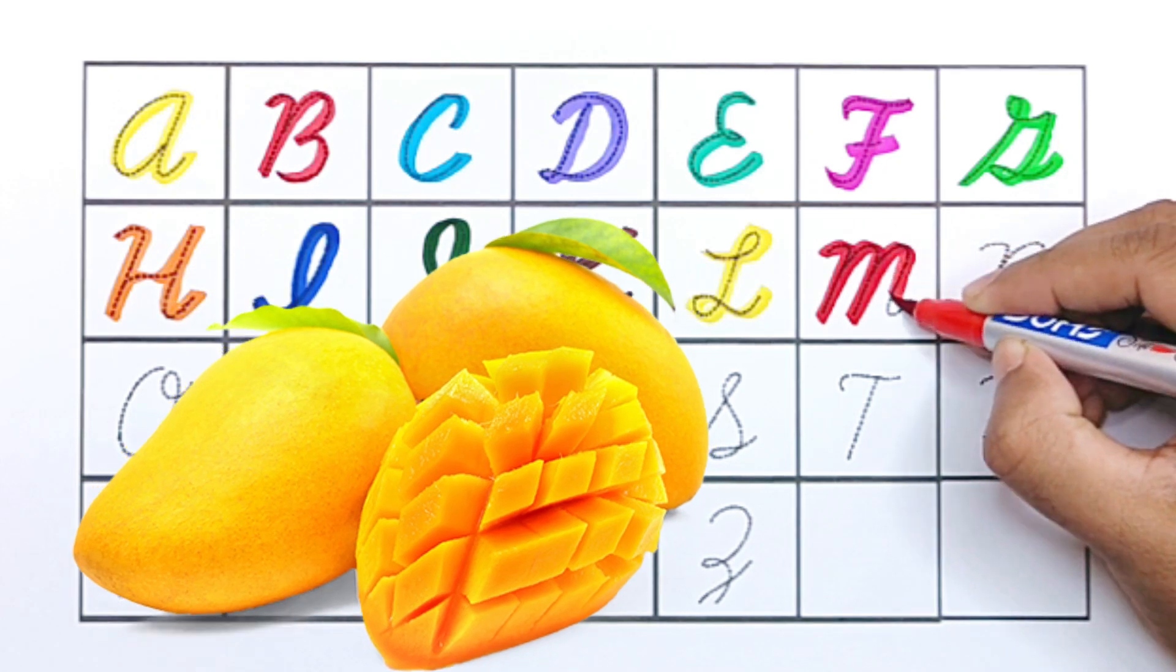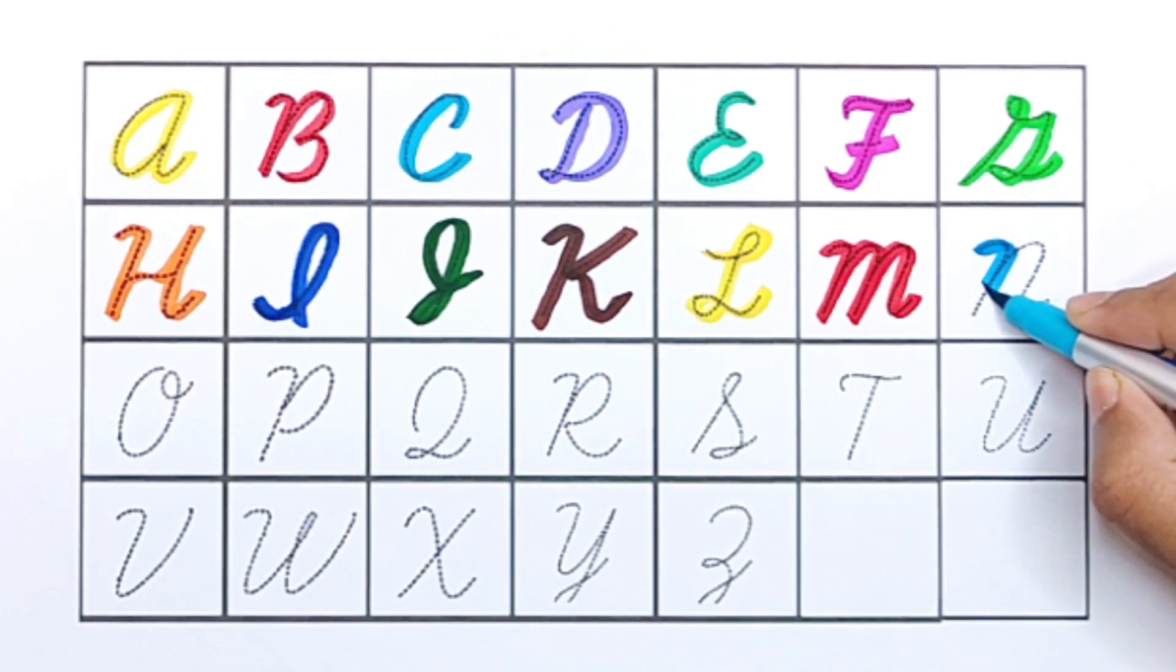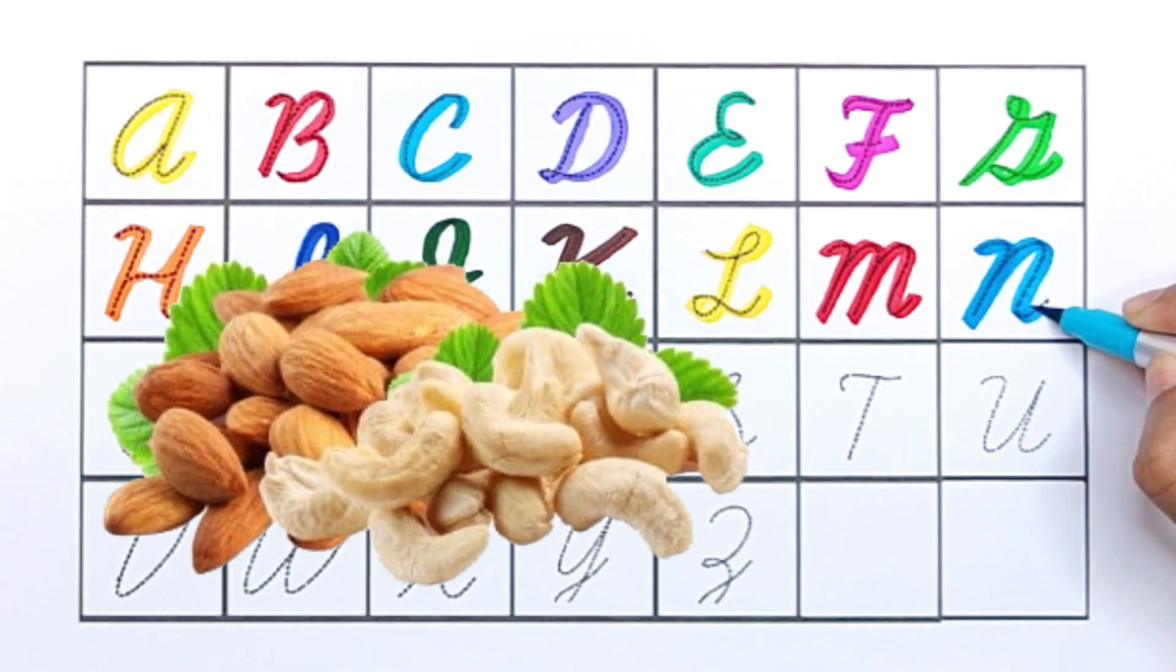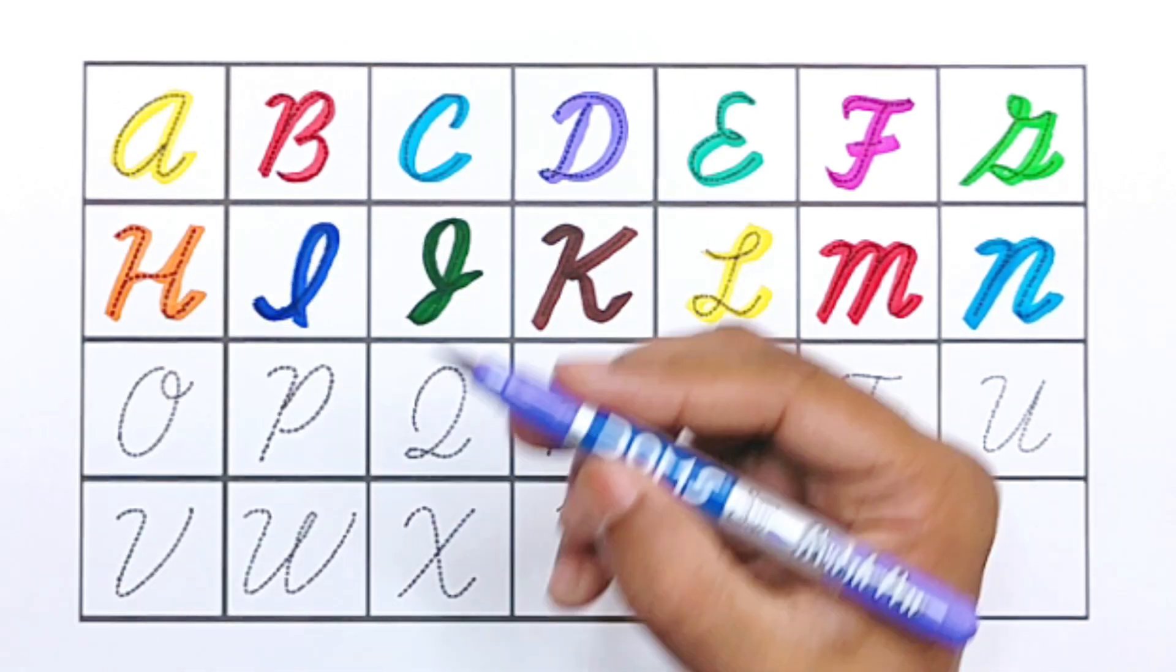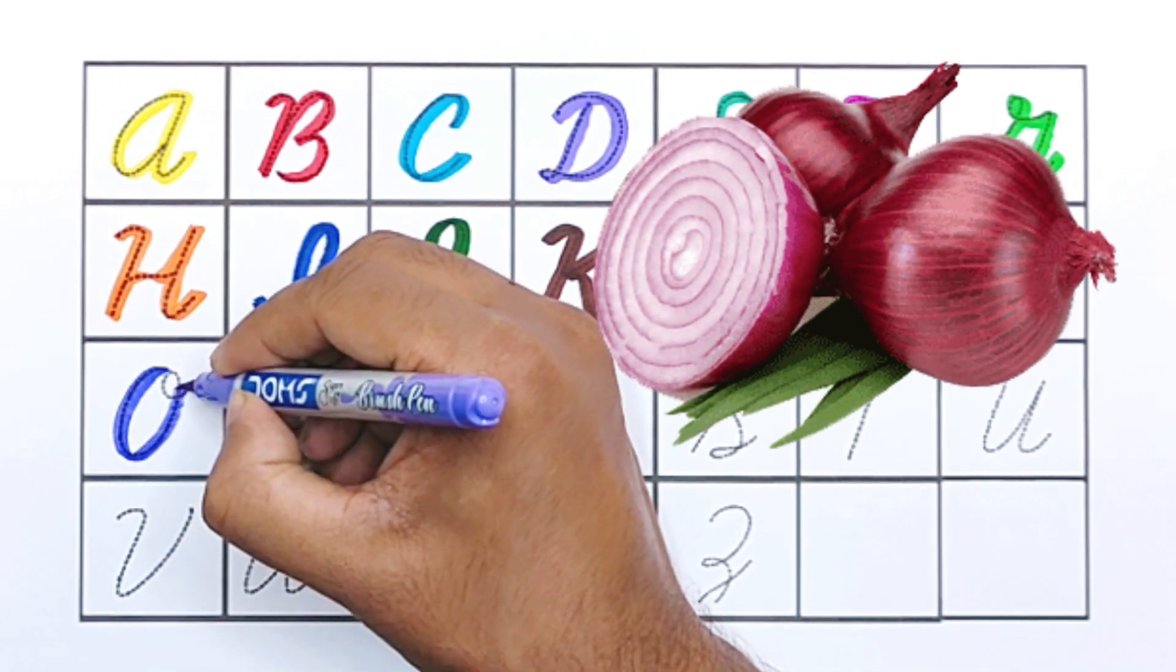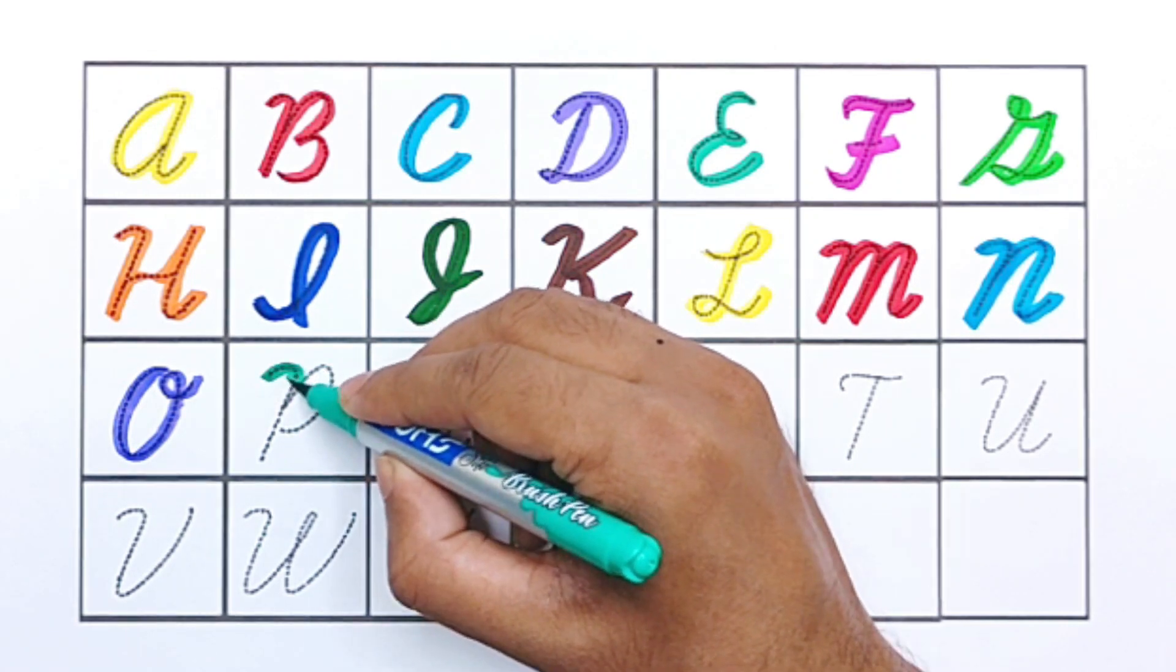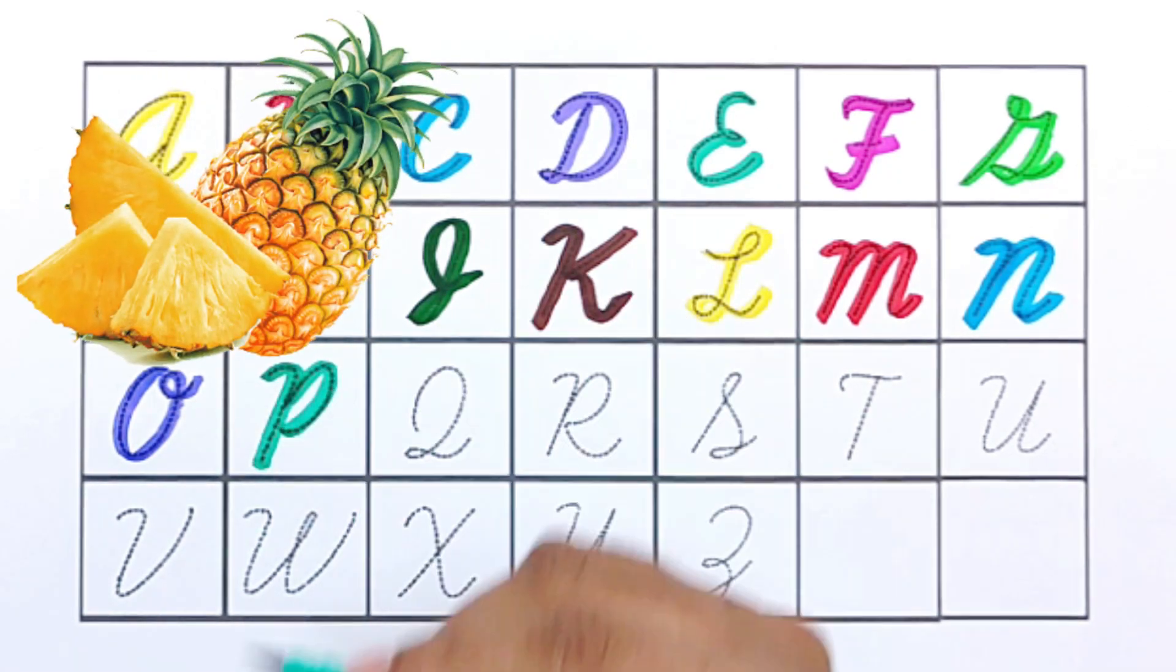Sky blue color N, N for nuts. Purple color O, O for onion. Sky blue color P, P for pineapple.